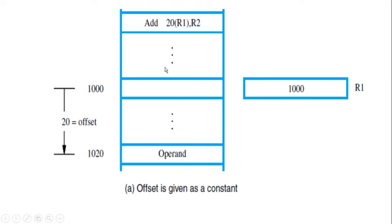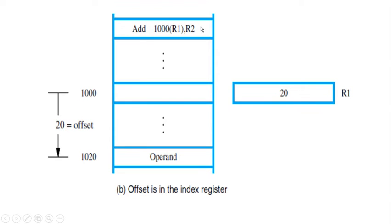Consider this diagram showing memory status. We have an instruction: ADD 20(R1), R2. This notation indicates indexing. To solve: move to register R1, fetch the value 1000 stored there, add the constant 20 to the content of R1, and generate the effective address 1020. Then move to location 1020, fetch the operand value there, add it with the content of R2, and store the result in R2.